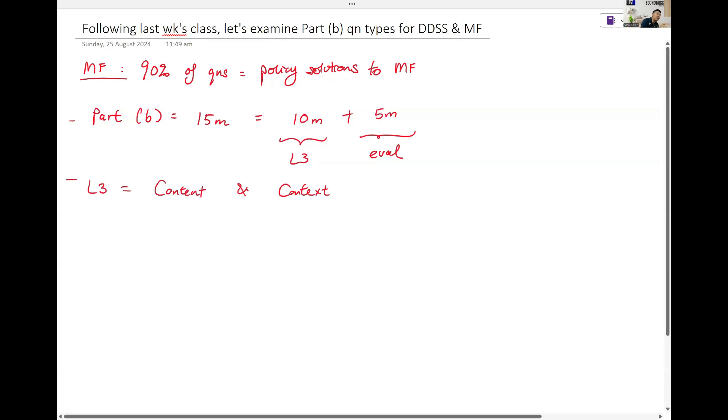But we need something else for Part B. Content, Context, as well as Balance. We need balance for Part B. BCC. So balance gives you two sides.